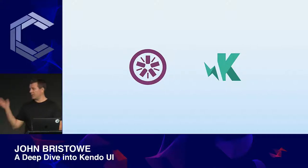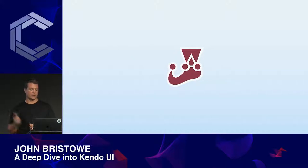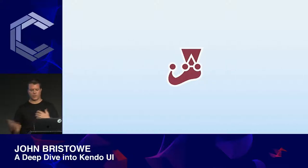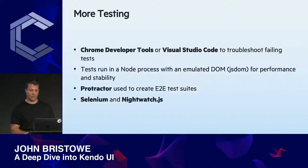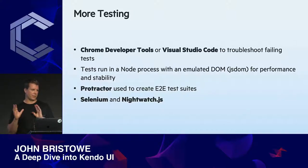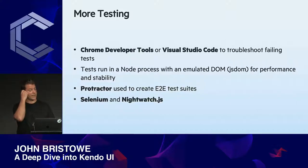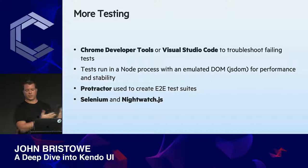Another tip for component developers: make sure you automate everything. We have builds running all the time for continuous integration — every check-in triggers a build run and a test run. For Vue, we use Jasmine along with Karma. For Angular and React, we use Jest. Both are set up on a package-by-package basis and each component comes with its own tests. For end-to-end tests, we must simulate actual user interactions rather than isolated component logic.